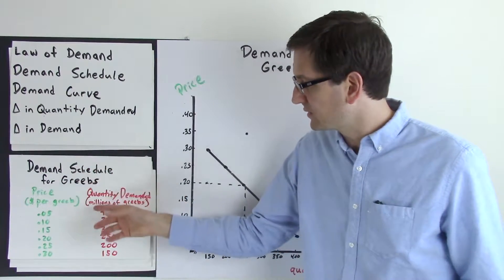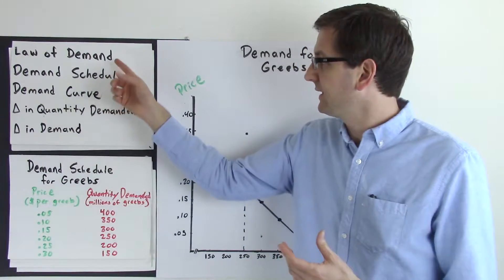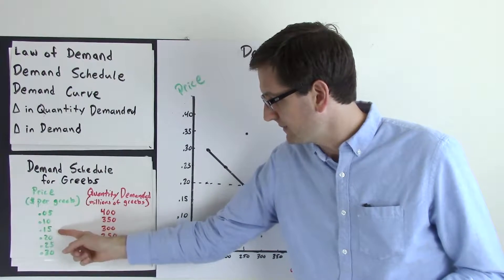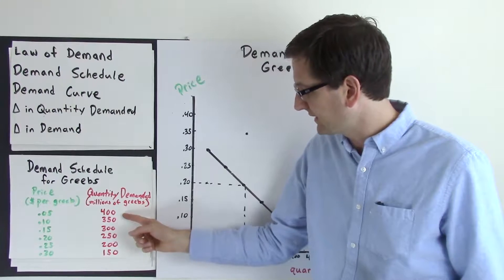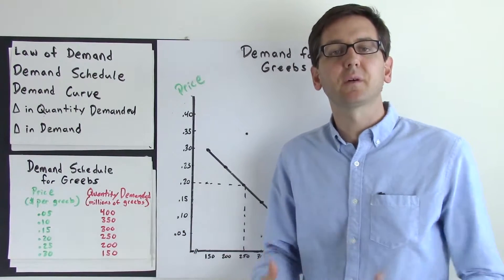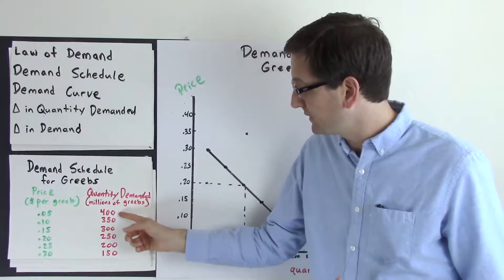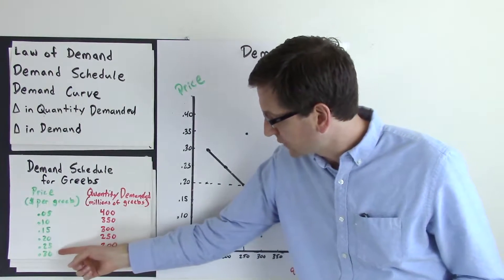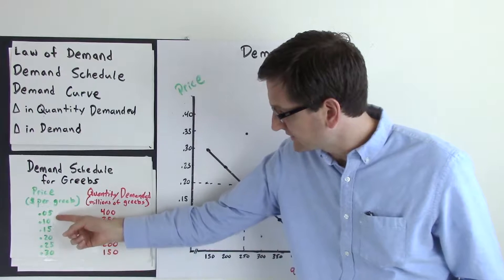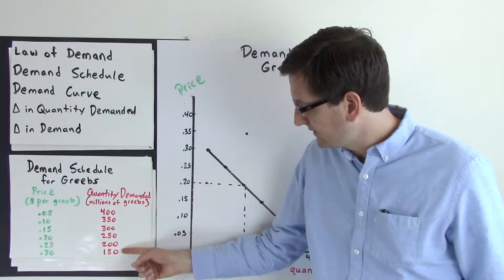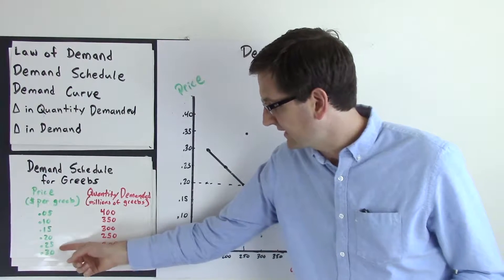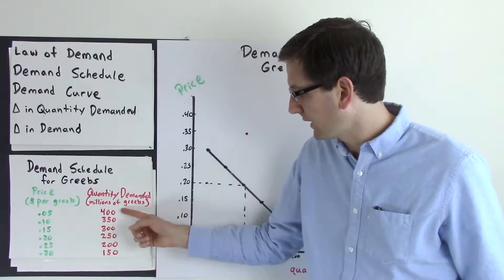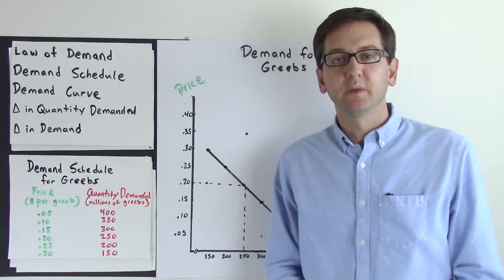According to this demand schedule, we can see it illustrates the law of demand, because as the price per Grebe goes up, we see that the quantity demanded decreases — that inverse relationship. We can look at it the opposite way as well: as price decreases, the quantity demanded increases. As things get less expensive, we want more of them; as things get more expensive, we want less of them.